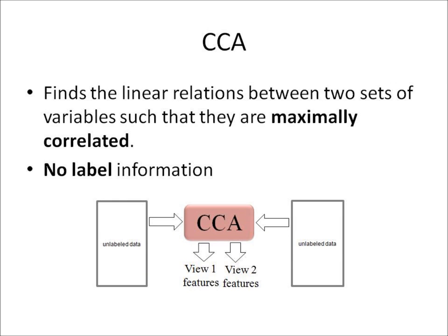If we don't have the class information, we use CCA to reveal the features related to the data itself. CCA finds linear relations between two sets of variables such that they are maximally correlated. Those two views can be two different representations of the same thing, such as the audio and image of the same person speaking. CCA extracts features of both views without label information.